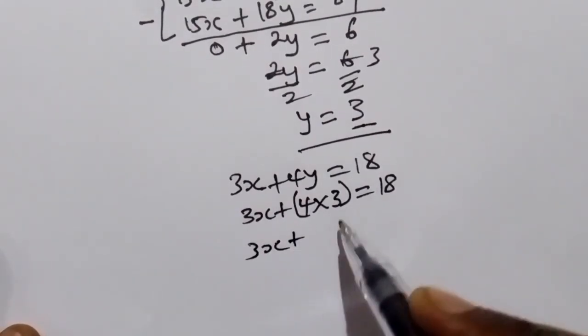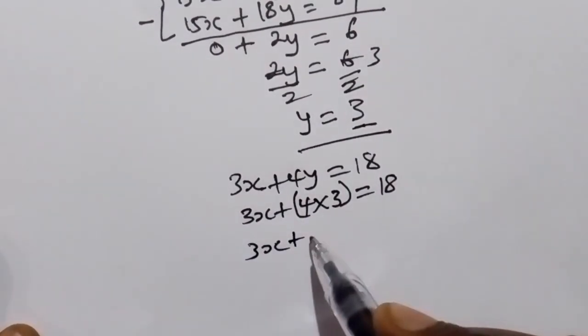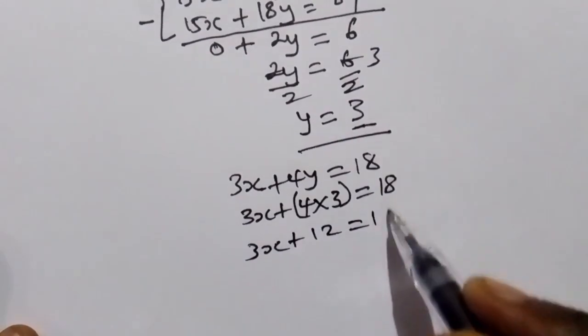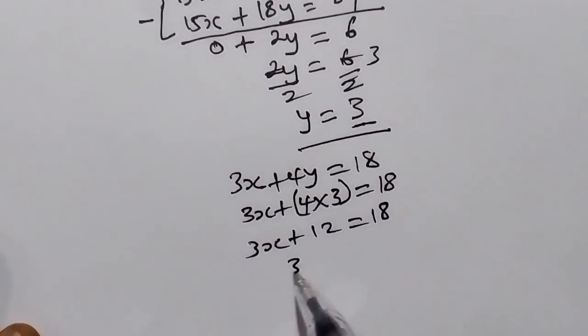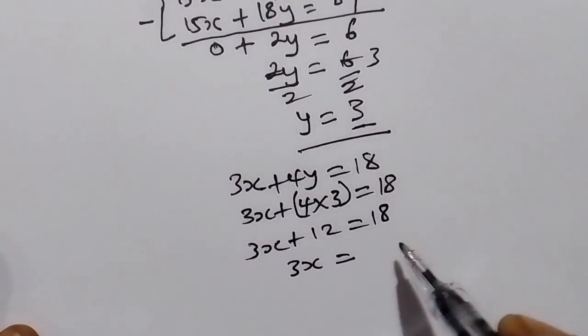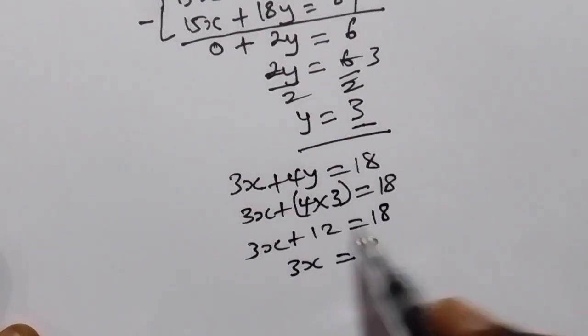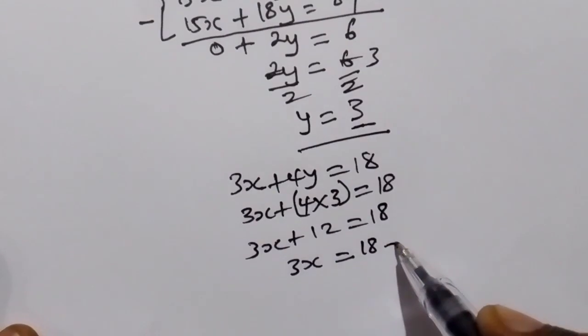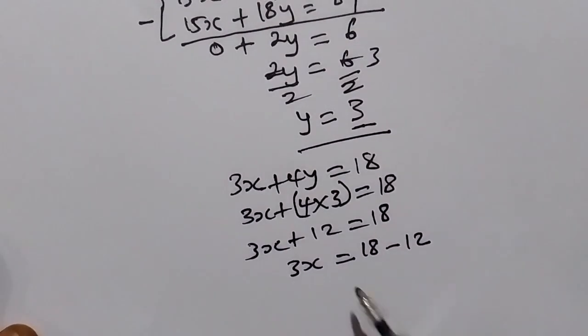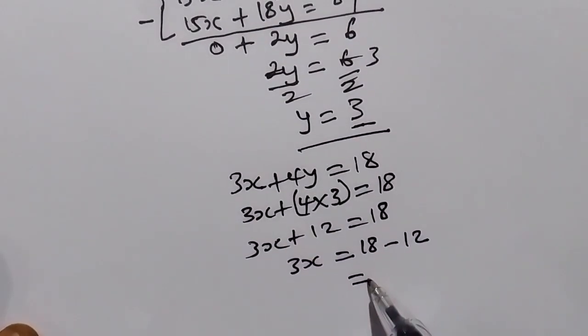3x plus 4 times 3 is 12, is equal to 18. 3x is equal to 18. We bring positive 12 to this other side. It becomes negative 12, which is equal to 6.